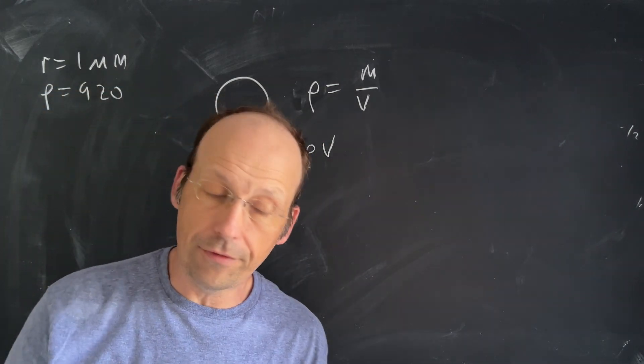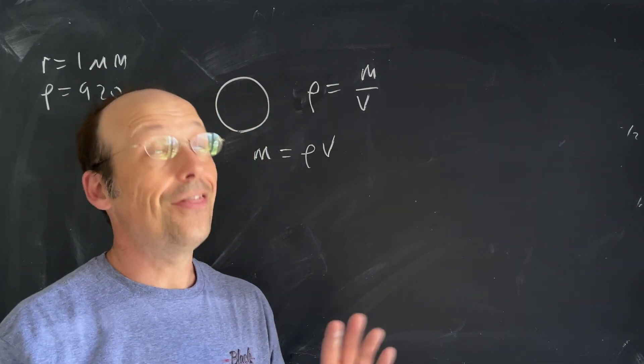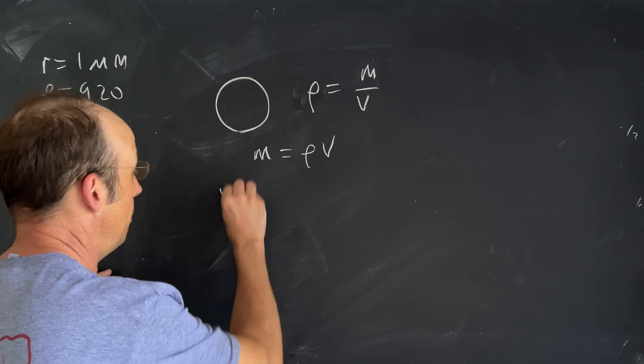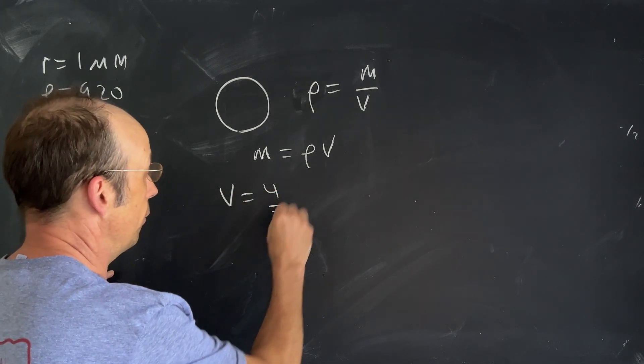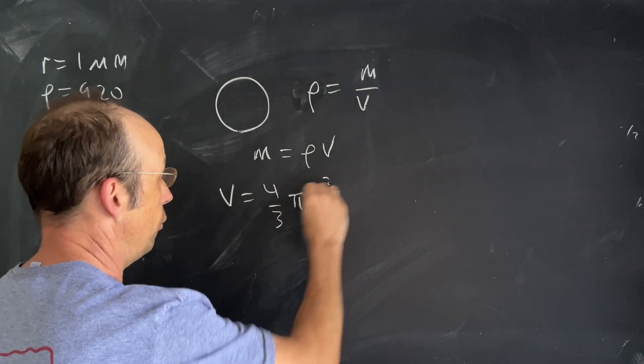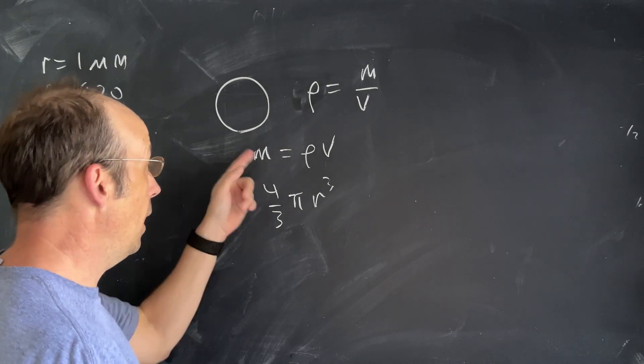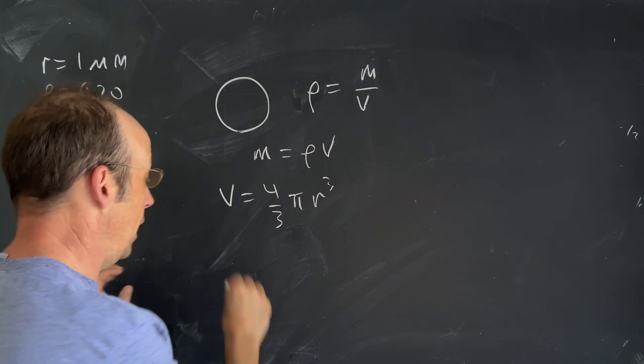What's the volume of a sphere? Maybe you forgot, that's fine you can look it up. The volume of a sphere is four-thirds π r cubed. So I can find the volume, I can find the mass.